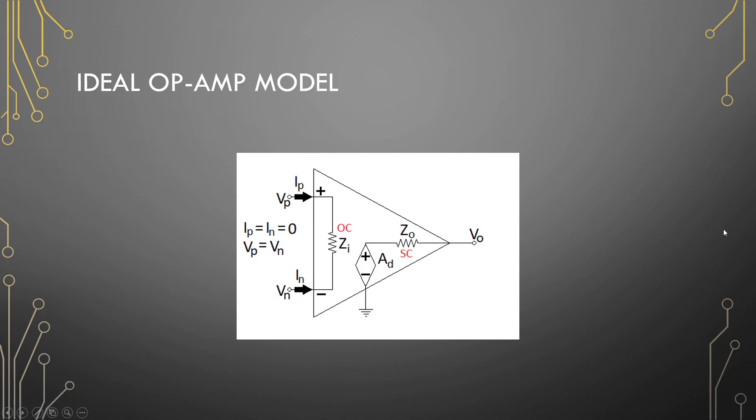And we have no losses going out of our op-amp. Z-out is assumed to be a short circuit.